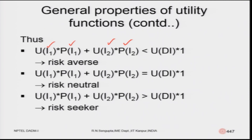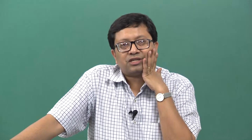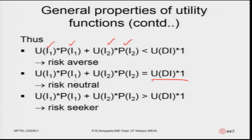For a risk-neutral person, the utility of the deterministic investment equals the expected utility of the non-deterministic event: u(d_i) × 1 = u_1×p_1 + u_2×p_2. The values exactly match with respect to the sure event — that is the perception of a risk-neutral person.